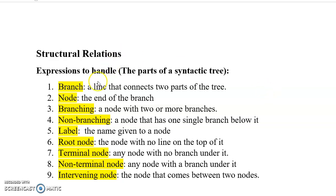First, we have something called branch, node, branching, non-branching, label, root node, terminal node, non-terminal node, and intervening node. And beside that, we will get an idea about the family tree names in syntax.